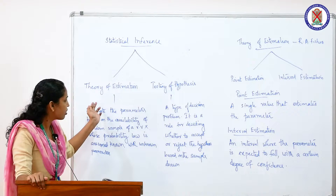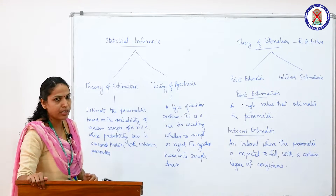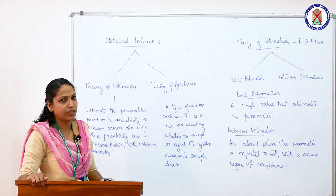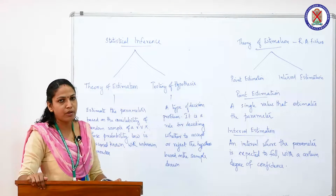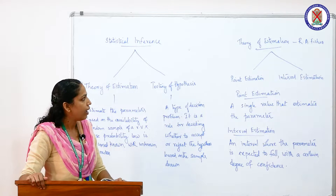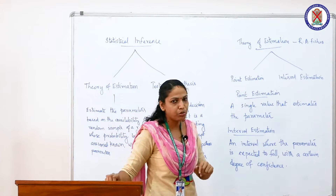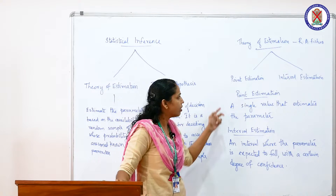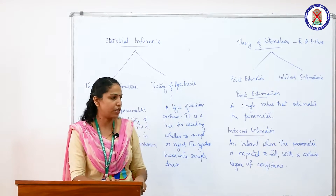Now we are going to discuss about the first section of statistical inference, that is the theory of estimation. It is expounded by Professor R.A. Fisher. In theory of estimation, it is divided into two categories: point estimation and interval estimation.